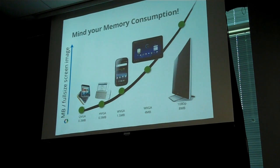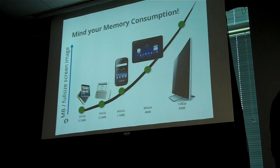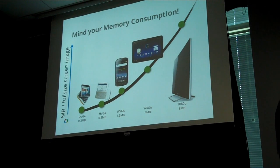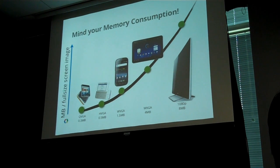Memory consumption is worse than you think. When you double the resolution, you quadruple the amount of memory. Going from a smartphone to a tablet, you go from 1.5 MB to 4 MB per screen. Going from a tablet to a 1080p television, you go from 4 MB to 8 MB per screen. This is one of the reasons nine-patches are a really good idea — you want to keep your memory consumption in check.